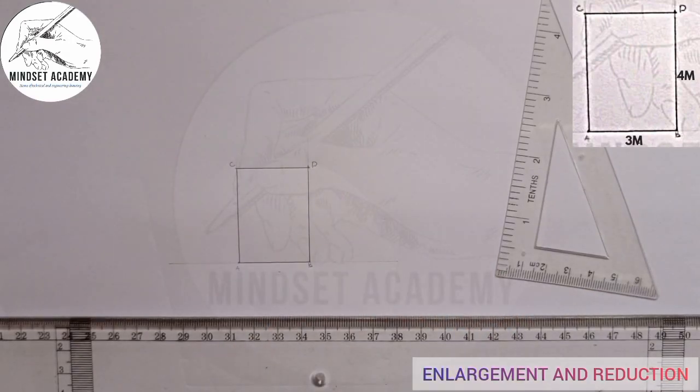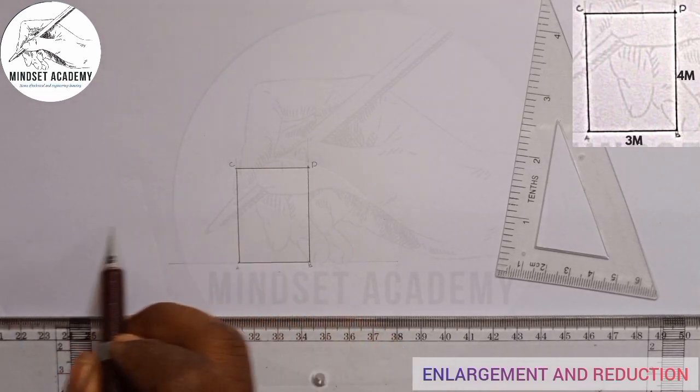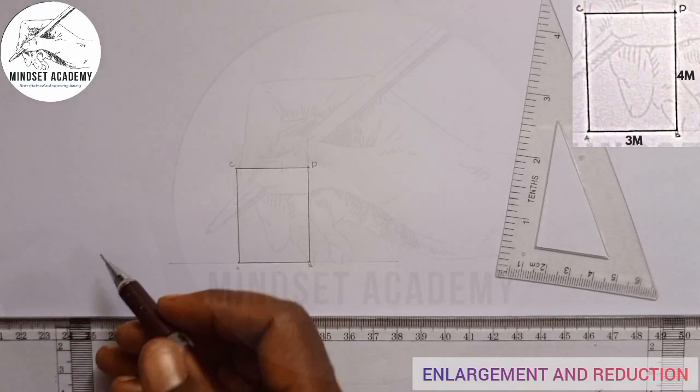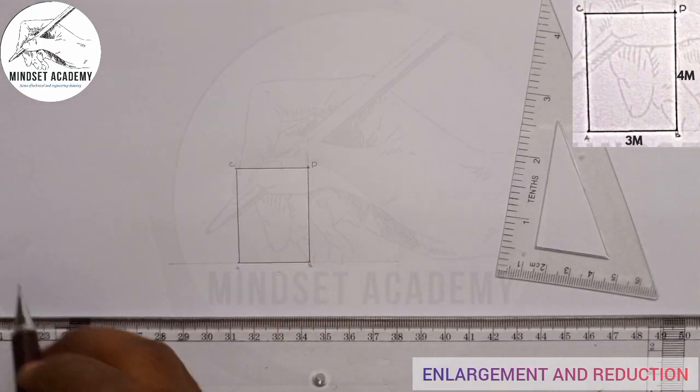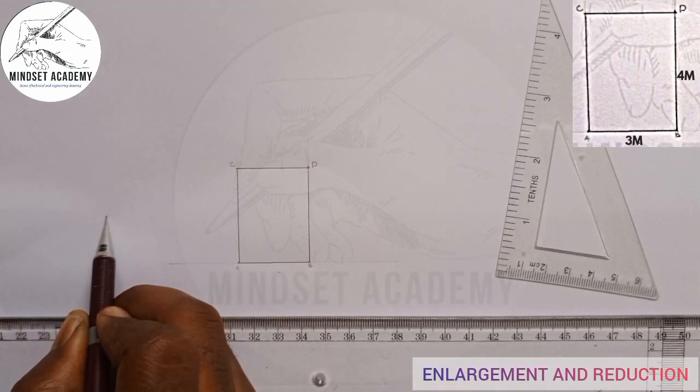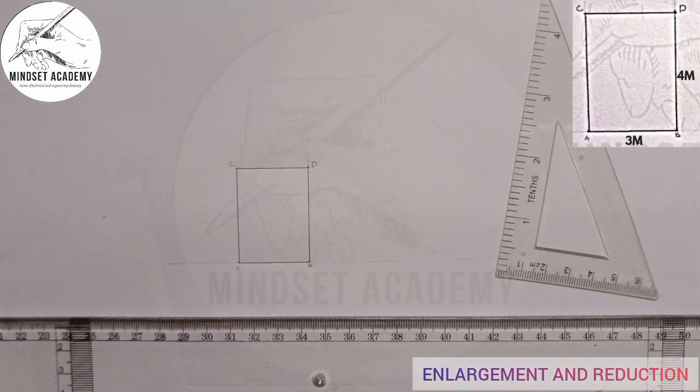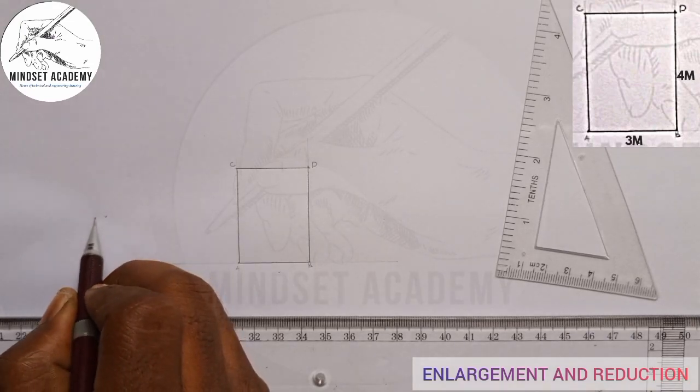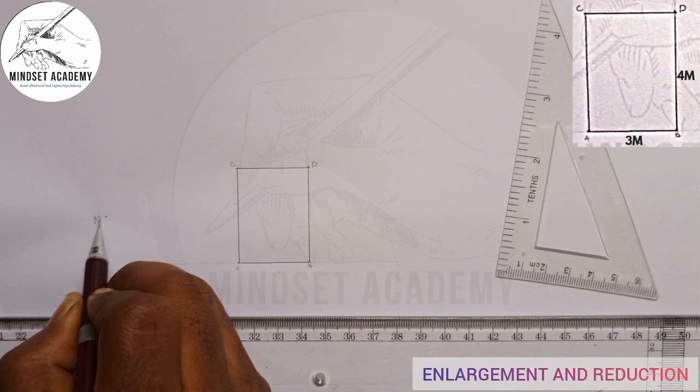And we want to enlarge it. In this case, we're not told any ratio, we're only told to enlarge. So what I'll do is I'll pick any point close to this here, probably at the center or maybe more. I'll just pick the point at any given distance away from here. I'll call that point M, probably M for mindset.